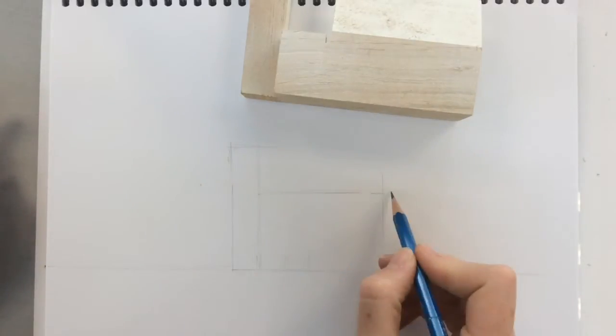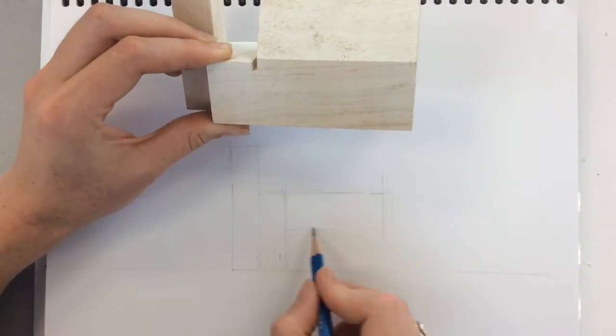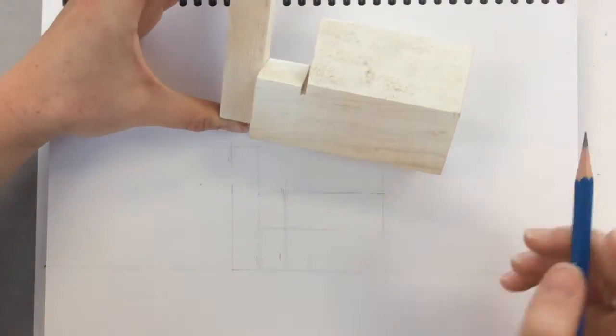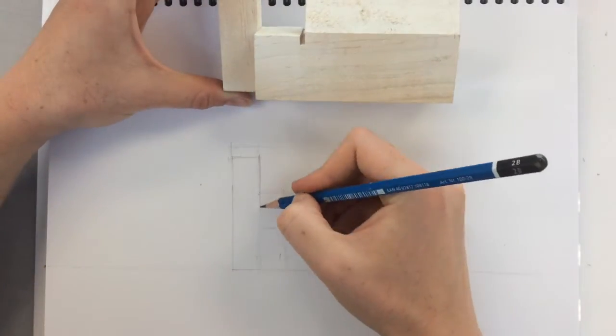I'm drawing really lightly because this is just me marking out the different boxes which the surfaces fit within. Later on, I will darken in the final edges because still everything's up for grabs.